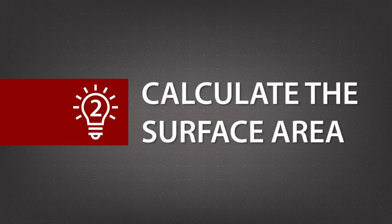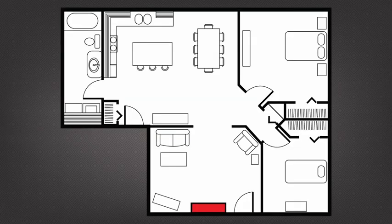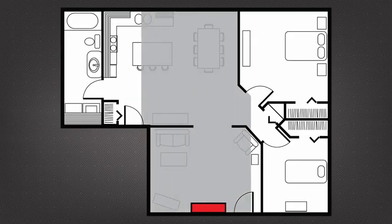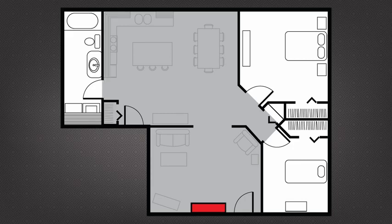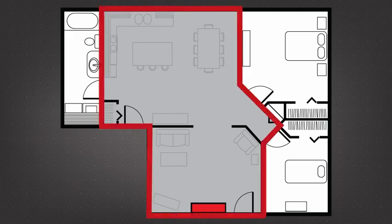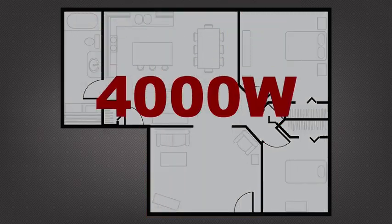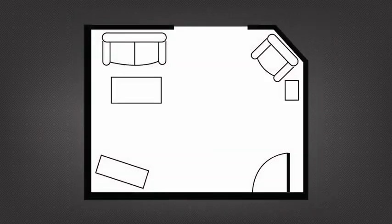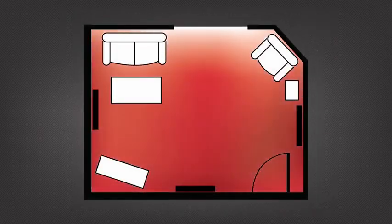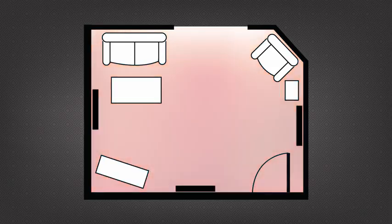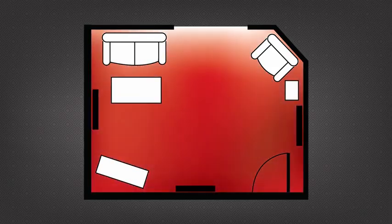Tip 2: Calculate the surface area. Calculate the surface area that the heat pump can directly access, not the total surface of the house. If the house needs 4000 watts of heating, you wouldn't install a 4000 watt heating unit in a single room, because the room will overheat. It's the same principle with a heat pump.